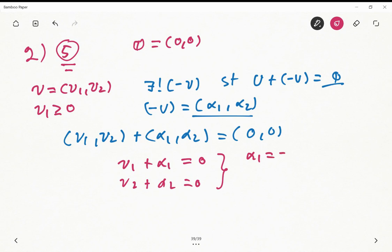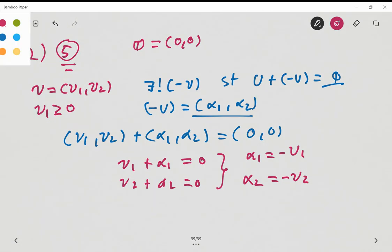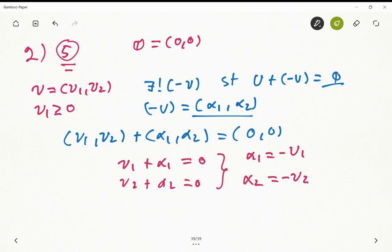So α1 equals -u1 and α2 equals -u2. You may say well this is trivial, it's just taking the negative values of the original vector.